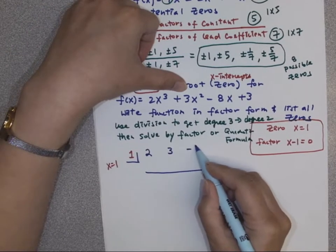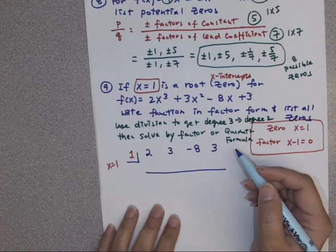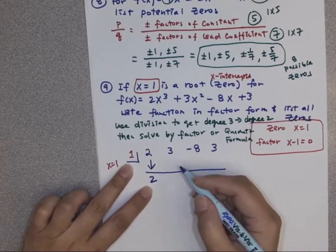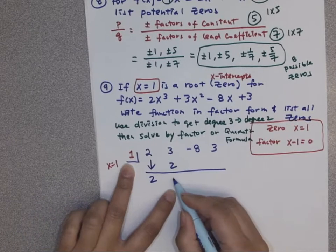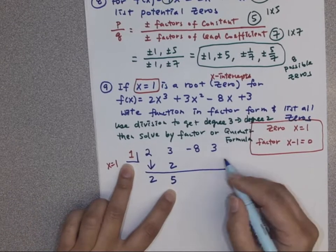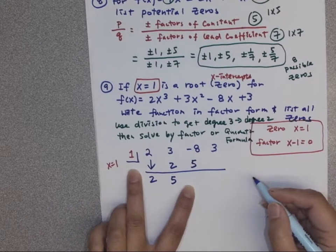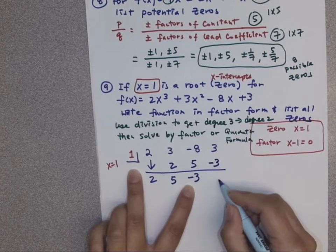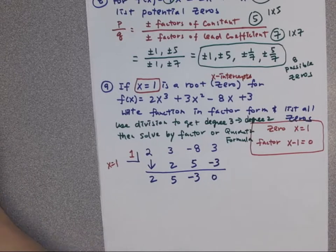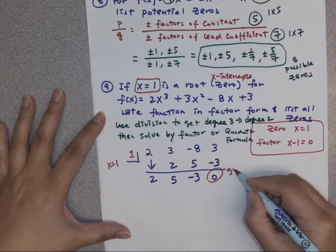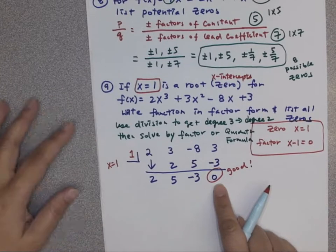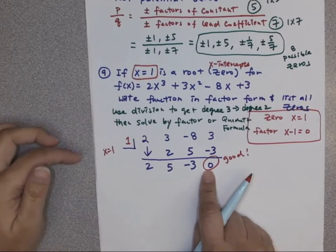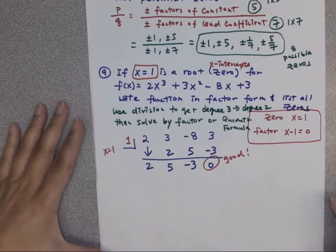If you want to pause the video and check it after you're done, you can do that. We bring down 2. Times 1 is 2. Combine that, we have 5. 5 times 1 is 5. Combine those two numbers, we got negative 3. Times 1 is negative 3. So we got a 0 here. Is it good or bad? It should be good because the remainder is 0. Means that's actually a solution. So they told us it's a solution. So if you do that and that's not a 0, you've already did something wrong. Maybe plug in the wrong number here or you did the step incorrect. So you want to double check.